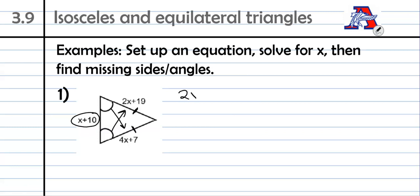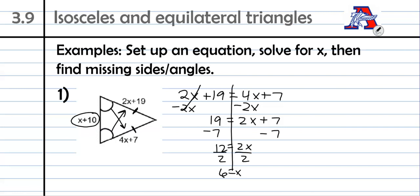We're just going to do 2x plus 19 equals 4x plus 7. And we're going to solve that. I'm going to kind of cruise through it here. I'm going to start by subtracting 2x from both sides. I'm going to subtract 7 from both sides. So I got 12 equals 2x, divide by 2, and 6 is equal to x.